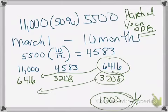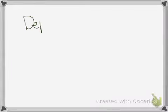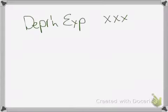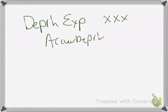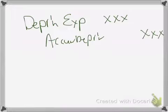My recommendations for studying: work the worksheet and compare it with the answer key. Make sure you understand all of these topics. Remember that your journal entry for depreciation will always be a debit to Depreciation Expense and a credit to Accumulated Depreciation for whatever amount you calculated. Anything you get wrong, go back and look at the video for more detail.